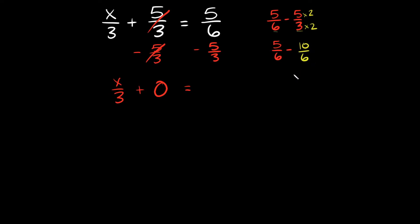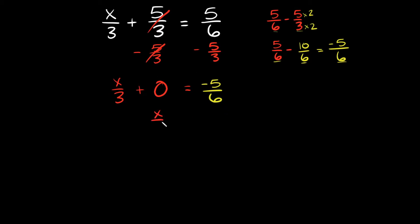Now they have the same denominator, so you can subtract these. 5 minus 10 is equal to negative 5, and that goes over 6. We have a 6 here and a 6 here, so you just keep the 6. So 5 over 6 minus 5 over 3 is equal to negative 5 over 6. Simplifying a little bit more, we're going to have x over 3 is equal to negative 5 over 6.